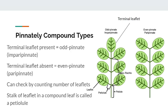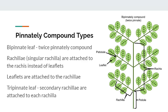There is also such a thing as a twice-pinnately compound, or bipinnate leaf, which is basically a pinnate leaf but each leaflet is replaced with another pinnate leaf. There is a main rachis, and then branching off of that there are smaller rachillae, and then attached to the rachillae are the leaflets. Tripinnate leaves also exist, which are basically the same thing as bipinnate but compounded one more time — there are smaller secondary rachillae attached to the rachillae, and then the leaflets are attached to the secondary rachillae.